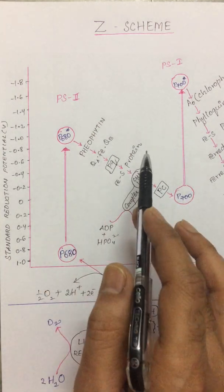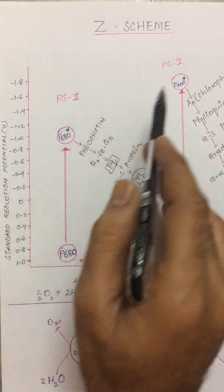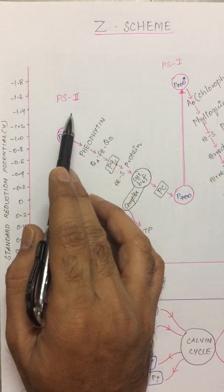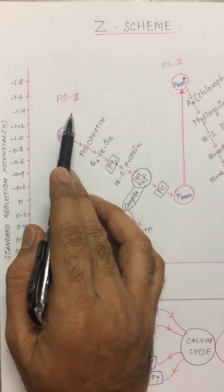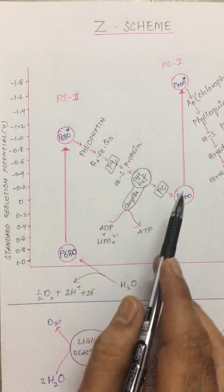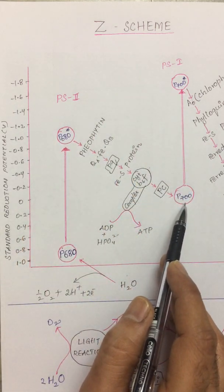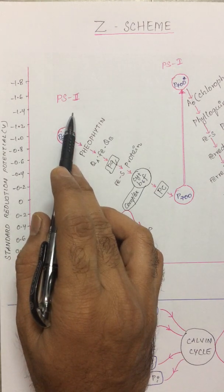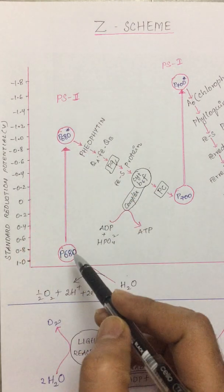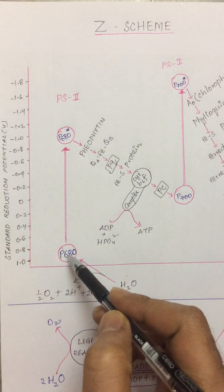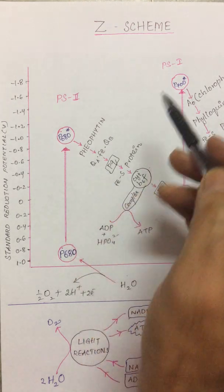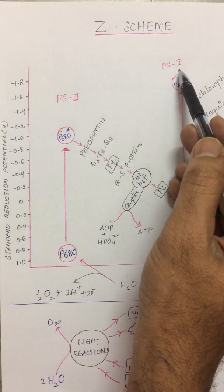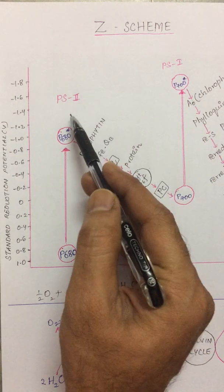Within this Z Scheme we have two different photosystems, referred to as Photosystem 1 and Photosystem 2. Photosystem 1 was discovered first, and only then Photosystem 2 was discovered. So in the Z Scheme, though we begin from P680, this was first discovered and hence it is called PS1. This is PS2.